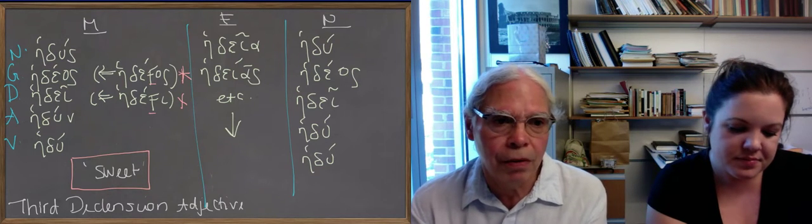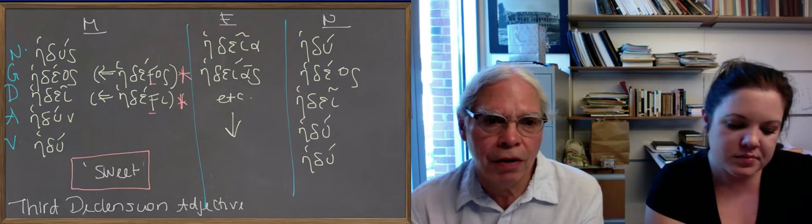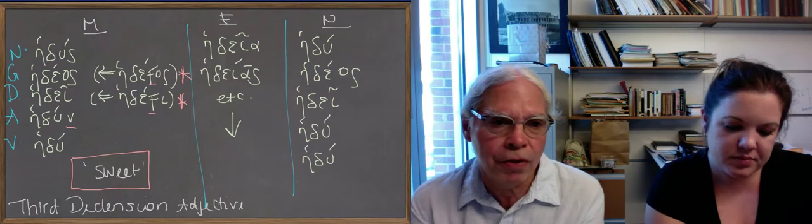The accusative is hedun. The ending begins with a consonant so the u remains a u. Notice that the genitive by a bunch of sound changes becomes hedaya, so it's just the first declension.